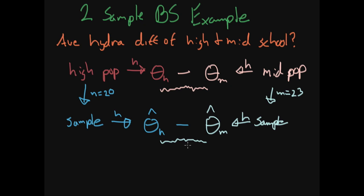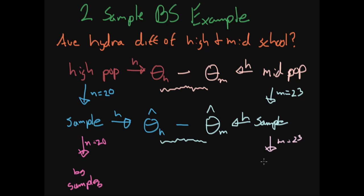Now let's say we're not just interested in a point estimate — let's say we want a confidence interval. From our high school sample, we take lots of bootstrap samples with sample size N equals 20, just like we sampled from the high school population. On the middle school side, we do the exact same thing: we take bootstrap samples with sample size 23, just like we sampled from the middle school population.